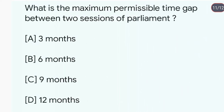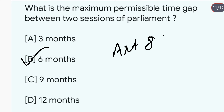What is the maximum permissible gap between two sessions of the Parliament? The maximum permissible gap between two sessions of Parliament is six months, as stated in Article 85 of the Indian Constitution. That's all for today. If you like my video, please like, comment, share and subscribe. Thank you.